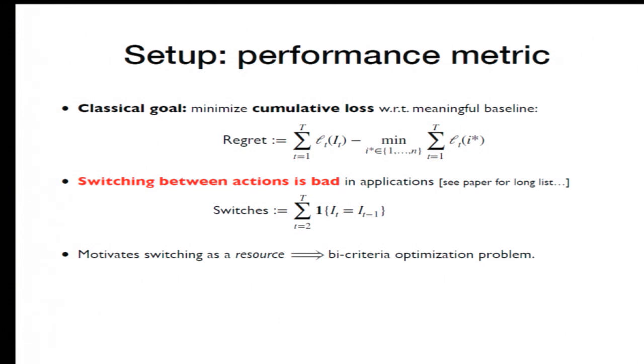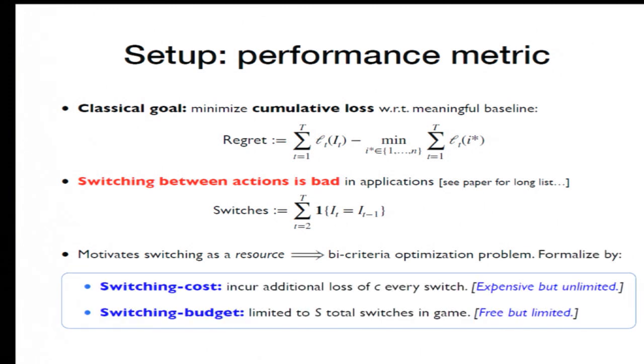So, we have here two competing objectives, regret and switches. And you want an algorithm that has low regret and low switches. The literature has two ways of formalizing this trade-off. The first is the switching cost setting, where you're trying to minimize regret, but every time you switch, you incur an additional loss of C.